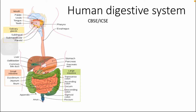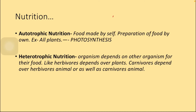Good morning to all students. Today we are going to discuss the human digestive system. First, nutrition: autotrophic nutrition is food made by self, for example through the photosynthesis process done by plants. Heterotrophic nutrition is when we depend on another organism to get food, like we depend on autotrophic organisms.